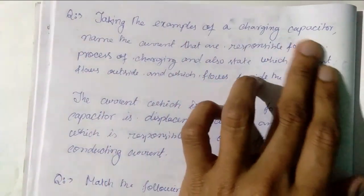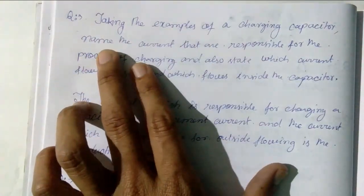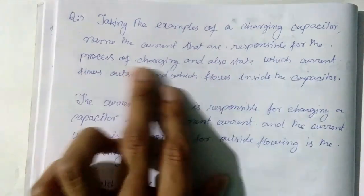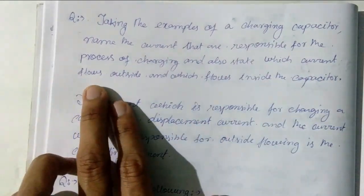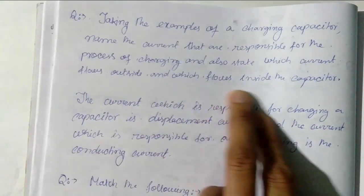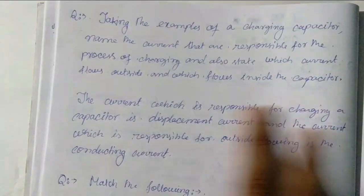Next question. Take the example of charging capacitor. Name the current that is responsible for the process of charging and also state which current flows outside and which current flows inside the capacitor.